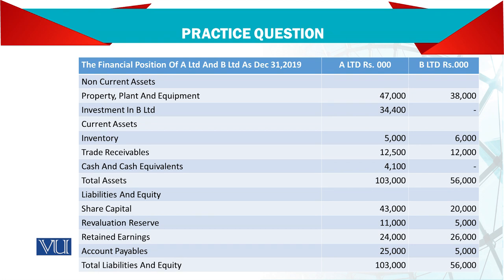Non-current assets include property, plant and equipment, and investments in B — that is the amount given as consideration when you acquired the shares of B. Current assets include inventory, receivables, and cash and cash equivalents. Then total assets, liabilities and equity follow.